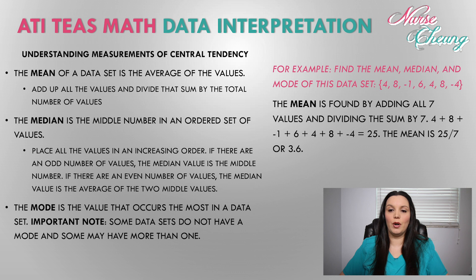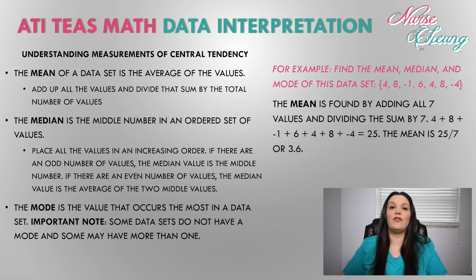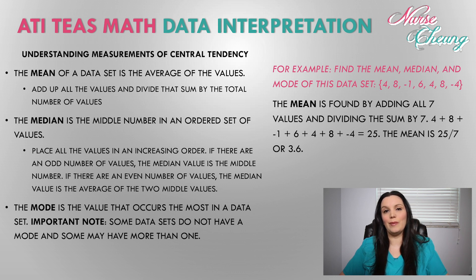Let's take a look at an example. Find the mean, median, and mode of this data set: 4, 8, -1, 6, 4, 8, -4. The mean is found by adding all seven values and dividing by seven. Adding 4 + 8 + (-1) + 6 + 4 + 8 + (-4) gives a total of 25. Dividing 25 by 7 equals approximately 3.6. So the mean is 25/7, or 3.6.